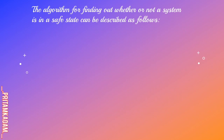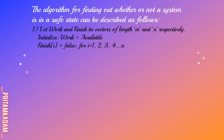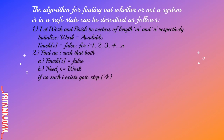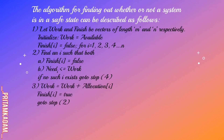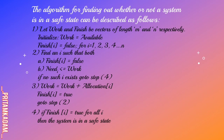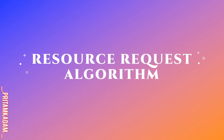The safety algorithm for finding whether a system is in a safe state: Step 1 - let work and finish be vectors of length m and n respectively; initialize work = available and finish[i] = false for all i. Step 2 - find an i such that finish[i] = false and need[i] ≤ work; if no such i exists, go to step 4. Step 3 - work = work + allocation[i], finish[i] = true, go to step 2. Step 4 - if finish[i] = true for all i, then the system is in a safe state.